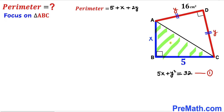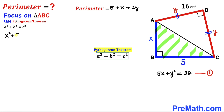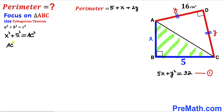Now let's focus on right triangle ABC and apply the Pythagorean theorem. The Pythagorean theorem states a squared plus b squared equals c squared. In our case the hypotenuse is AC, while the two legs are x and 5. So we get x squared plus 5 squared equals AC squared, which simplifies to AC squared equals x squared plus 25. I'm going to label this as equation 2.